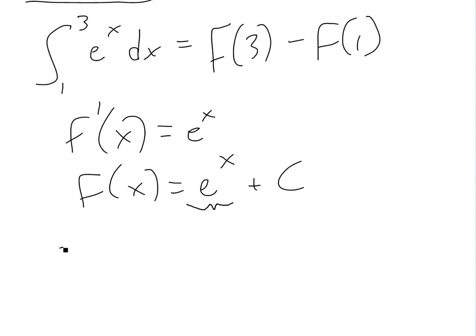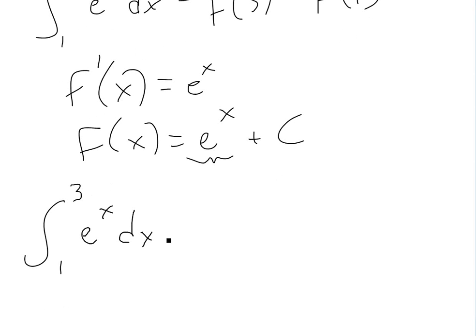So now this integral from 1 to 3 of e to the x equals e to the 3 minus e to the 1. That's the answer: e to the 3 minus e.